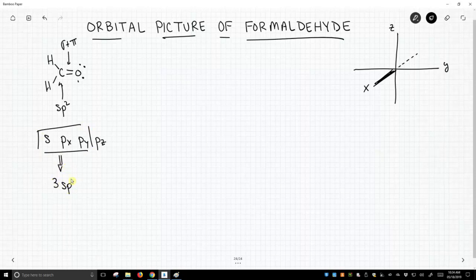We get our three sp2 hybrids. They're going to be in the xy plane because we chose to use px and py, and then we'll have a leftover pz, and that's how we'll make our pi bond.